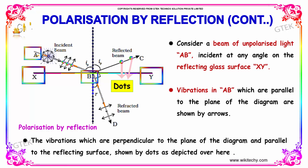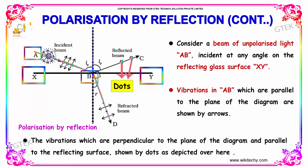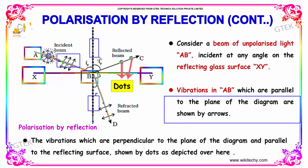Consider a beam of unpolarized light AB, incident at any angle on a reflecting glass surface XY. Vibrations in AB which are parallel to the plane of the diagram are shown in the figure and denoted by arrows. The vibrations which are perpendicular to the plane of the diagram and parallel to the reflecting surface are denoted by dots. So parallel is the arrow and perpendicular is dots.